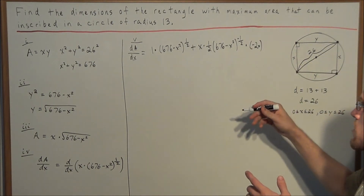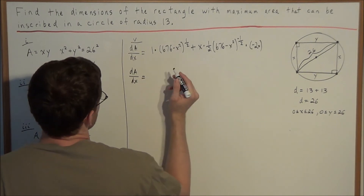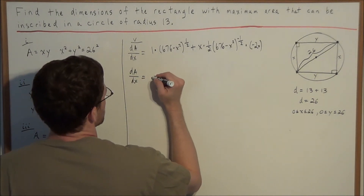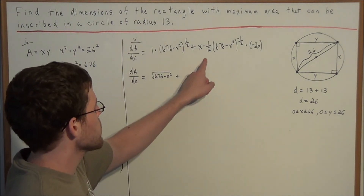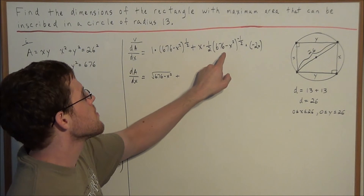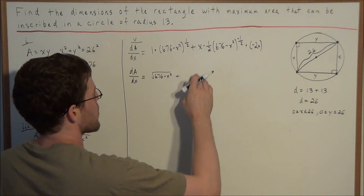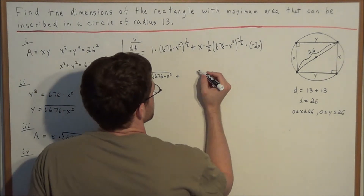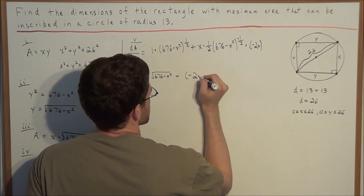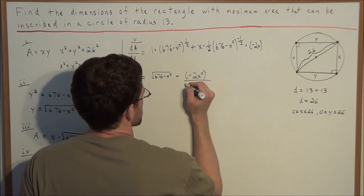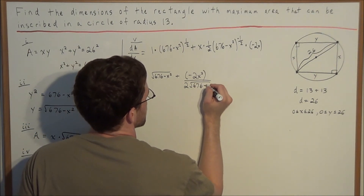Now we simplify. We put the expression back in radical form: dA/dx equals the square root of 676 minus x squared, plus x times negative 2x over 2 times the square root of 676 minus x squared. Notice that 2 divided by 2 cancels, leaving us with the square root of 676 minus x squared minus x squared over the square root of 676 minus x squared.